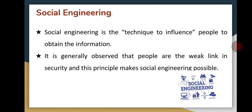Social engineering is the technique to influence people to obtain information. It is an art of manipulating a person's mind so they can give confidential information easily. Here social engineers change the mind of people to get confidential information. It is generally observed that people are the weak link in security, and this principle makes social engineering possible. Social engineers always look for people's security weaknesses, then attack them.